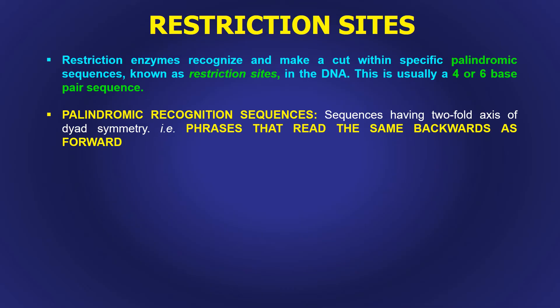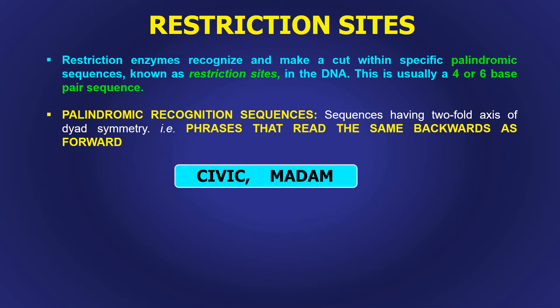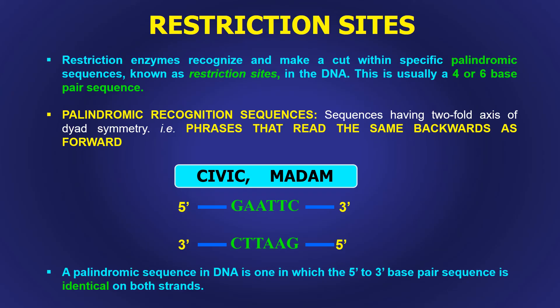What is palindromic? Palindromic means a word or a phrase that reads the same whether read forward or backward. For example, the words 'civic' and 'madam' — if we read these words from the forward direction or the backward direction, we get the same result: civic or madam. So these two words are palindromic. In the case of restriction sites, these are also palindromic, meaning they read the same from 5' to 3'. For example, the sequence GAATTC reads the same from 5' to 3' on both strands, making it palindromic in nature.